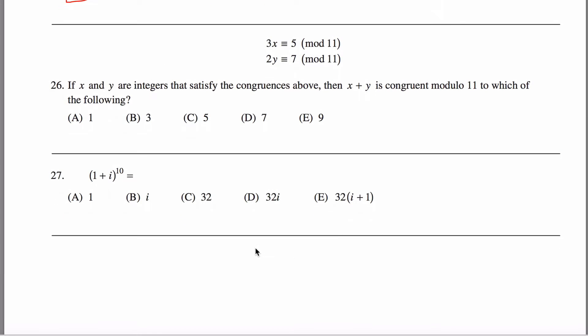You probably already know what that means, but in case you don't, what that's saying is 3x equals 5 plus some integer number of 11s. And similarly, 2y is equal to 7 plus some other number, n prime, of 11s.